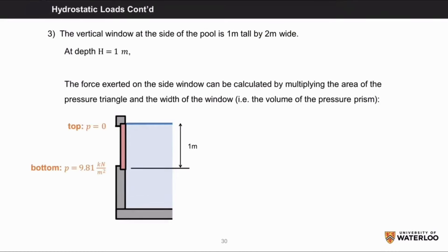Finally, we'll examine the vertical window at the side of the pool, which is 1 meter tall by 2 meters wide. We find that at the depth of 1 meter, the pressure is 9.81 kilonewtons per meter squared.